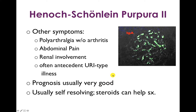There are other symptoms that can go along with Henoch-Schönlein purpura. Patients can complain of polyarthralgia, usually in the lower extremities, but not necessarily arthritis per se. Patients can also have abdominal pain and renal involvement, which is basically IgA deposition in the glomeruli.